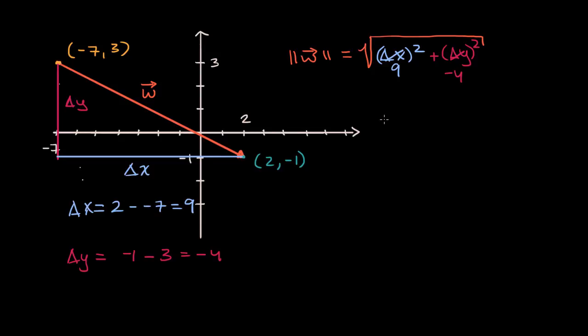And so our magnitude is going to be equal to the square root of nine squared is 81, plus negative four squared is 16. And so what is that going to be? Let's see, if you add six to it, that gets to 87. And you add another 10. That's the square root of 97.